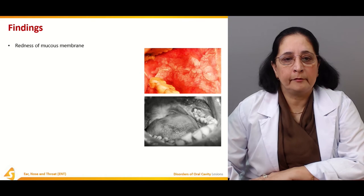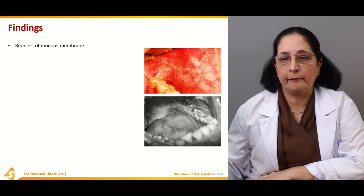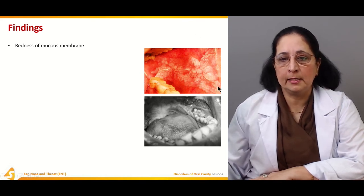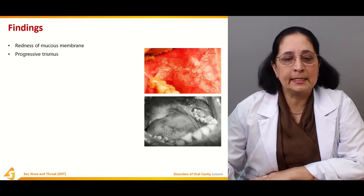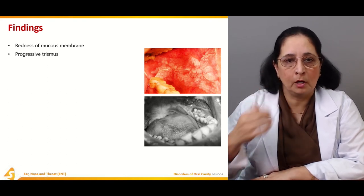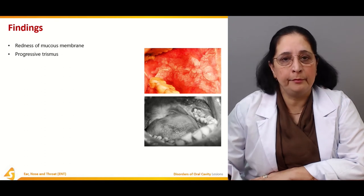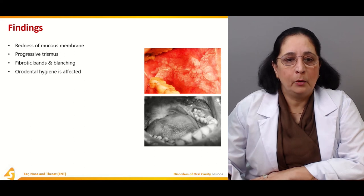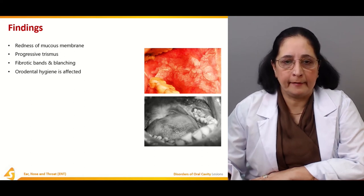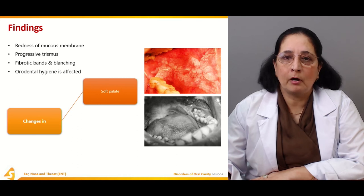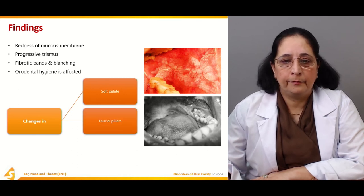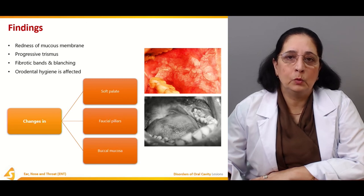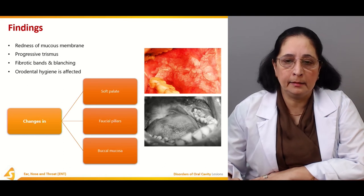Findings include redness of the mucous membrane, progressive trismus or lockjaw because of the fibrotic tissue, fibrotic bands and blanching, and affected orodental hygiene. There are also changes in the soft palate, faucial pillars, and buccal mucosa.